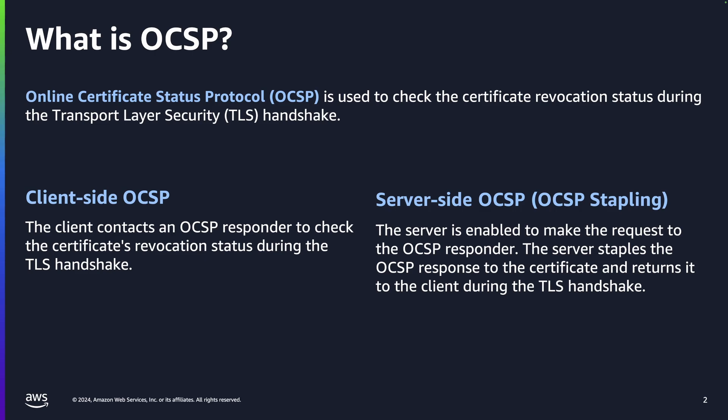There are two main ways OCSP can be used. The first is client-side OCSP. In this mode, during the TLS handshake, the client contacts an OCSP responder to verify the revocation status of the server's certificate. An OCSP responder, also known as an OCSP server, receives and responds to OCSP requests from clients that seek to verify the revocation status of certificates.